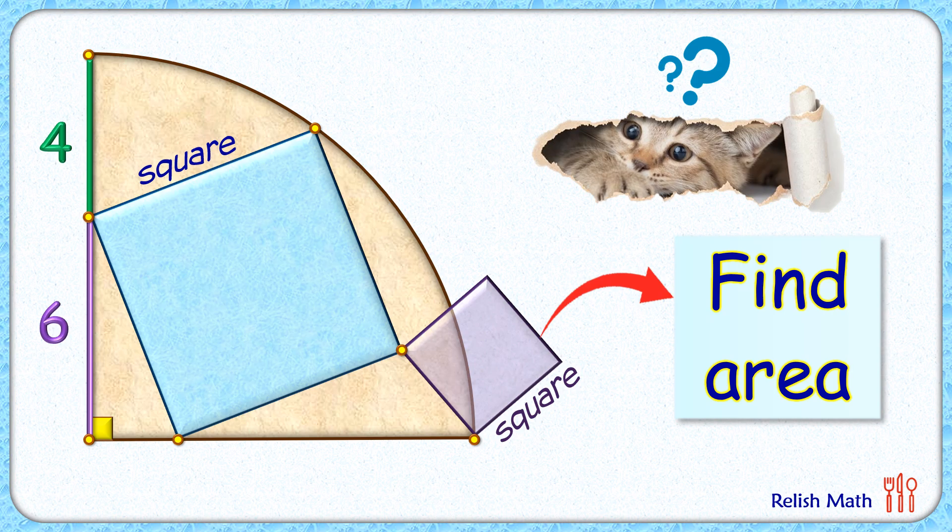Welcome everyone to this interesting question. We are given a quadrant with radius 10 centimeters with a blue square inside it. The length of this green and purple line segment is given as 4 and 6 centimeters. With this limited data, we have to find the area of this purple square whose two vertices align with the vertex of square and vertex of quadrant.